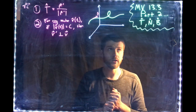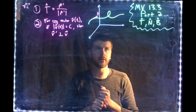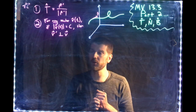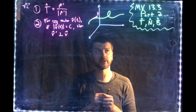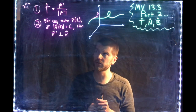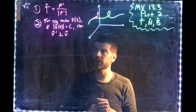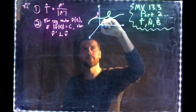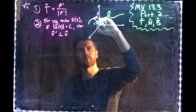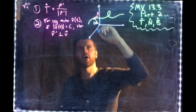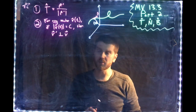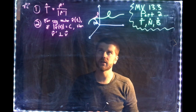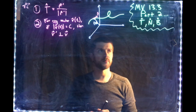Welcome to the second part of 13.3, where we're going to talk about three very special vectors: t-hat, n-hat, and b-hat. Before we begin, I want to remind us of two things. We already know what one of these vectors is. We already know that t-hat, the unit tangent vector, for a given vector-valued function r of t is equal to r prime over the magnitude of r prime. So we take the velocity vector and turn it into a unit tangent vector — a vector of length one that points perfectly tangent to the curve.